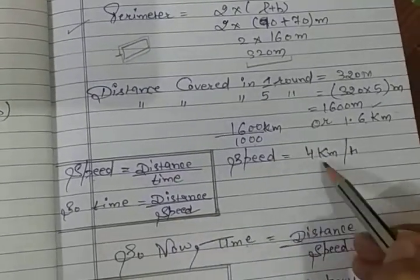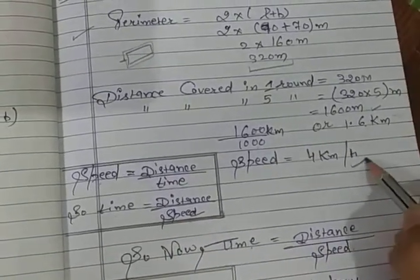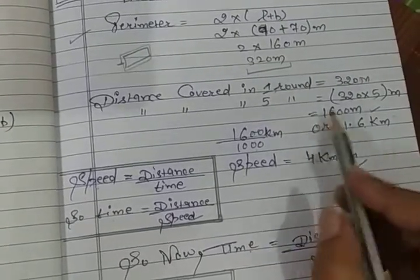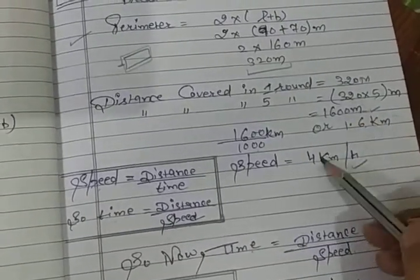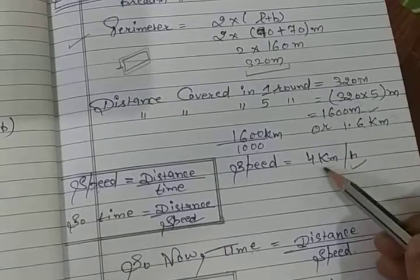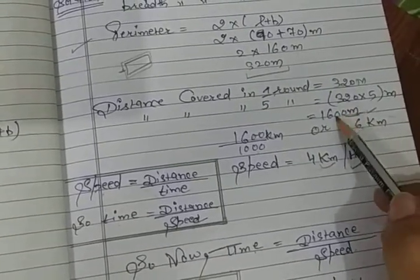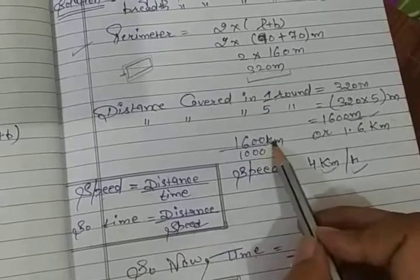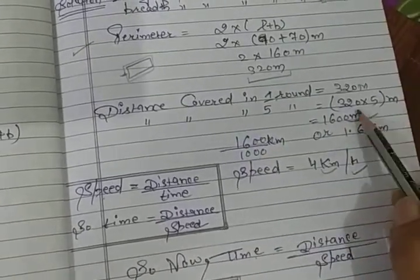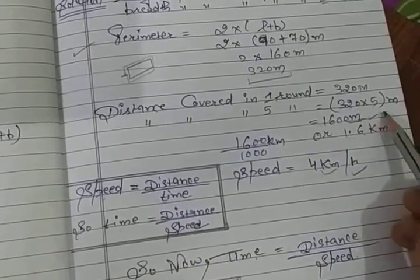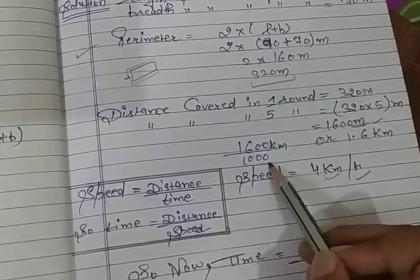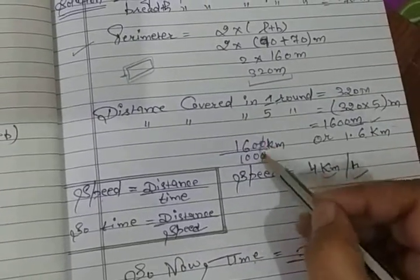Now you have speed, 4 km per hour, given in your question. Now you have 1600 meters. When you change to kilometers, 1 meter is equal to 1 over 1000 km. Simply write 1000 in the denominator and reduce. Now see 16 over 10, it means 1.6 km.